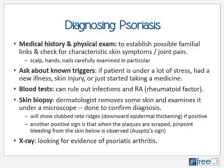When a doctor attempts to diagnose psoriasis, a medical history and physical exam are important to establish possible genetic connections and check for characteristic skin symptoms, as well as joint pain occurring in up to 30 percent of patients. The doctor will carefully examine the scalp, hands, and nails — all characteristic spots for psoriasis — and will ask about known triggers such as stress, new illness like a strep infection, skin injury, or new medications.